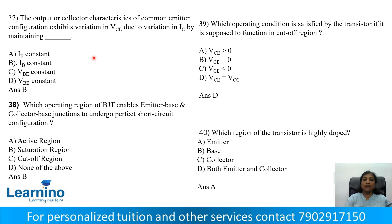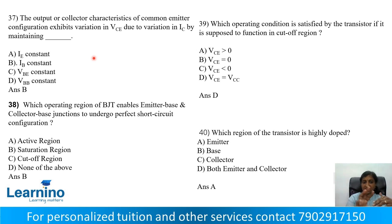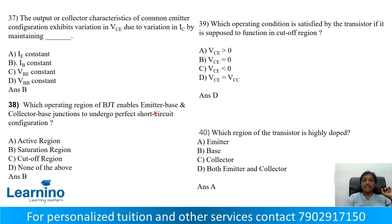Question number 37: The output or collector characteristics of common emitter configuration exhibits variation of VCE due to variation of IC while maintaining IB constant. Common emitter output characteristics follow certain parameters. Question number 38: Which operating region of BJT enables emitter-base and collector-base junctions to undergo perfect short circuit? Correct answer is Saturation region.